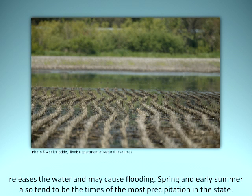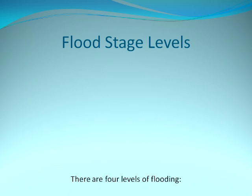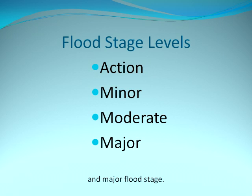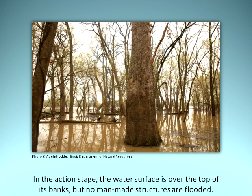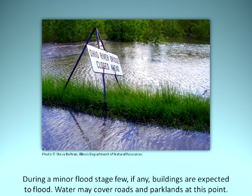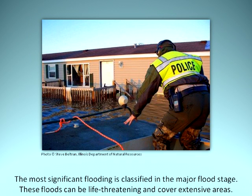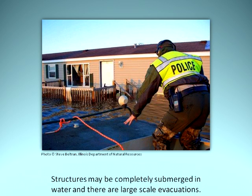There are four levels of flooding: action stage, minor flood stage, moderate flood stage, and major flood stage. In the action stage, the water surface is over the top of its banks, but no man-made structures are flooded. During a minor flood stage, few if any buildings are expected to flood, and water may cover roads and parklands. In a moderate flood stage, roads are likely to be closed or cut off, buildings begin to be flooded, and evacuations are possible. The most significant flooding is classified as the major flood stage — these floods can be life-threatening, cover extensive areas, structures may be completely submerged, and there are large-scale evacuations.